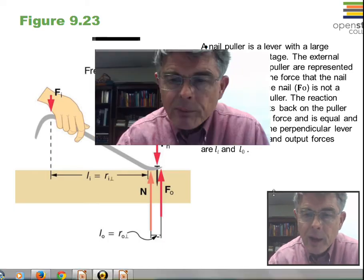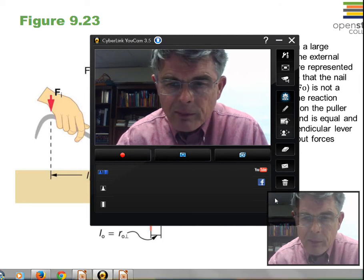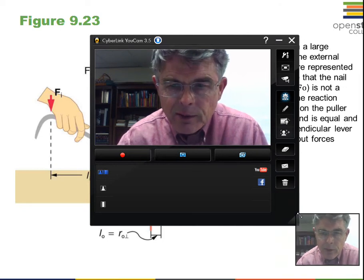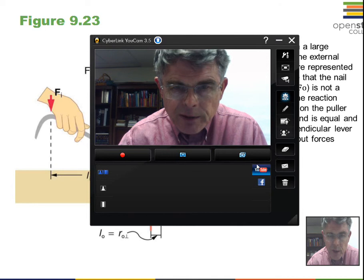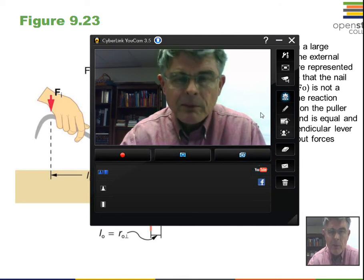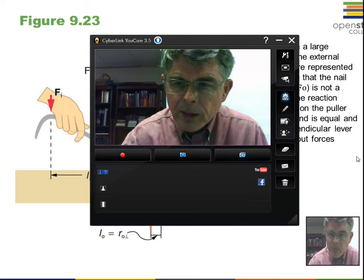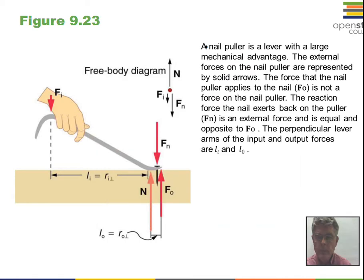In this chapter we have the opportunity to talk about mechanical advantage and machines. That's not really much of a focus for my course. I'll talk just a little bit here about a machine and a nail puller.